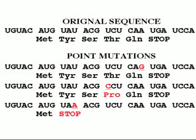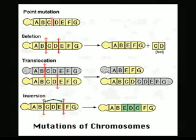Mutations can typically have one of three effects. Some of them are bad — they decrease the overall fitness or survivability of the organism and are not selected for. The vast majority of mutations are neutral, meaning they provide no change whatsoever to the organism's fitness, and it is neither helped nor harmed. The third type, which is the rarest, are beneficial mutations, which help the organism by increasing its fitness and the likelihood that it will reproduce and pass on that mutation.